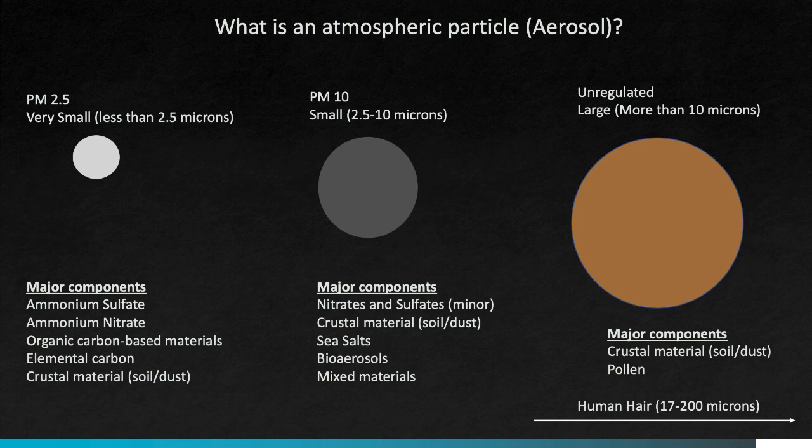The particle sizes we talk about start with PM2.5. This group is made of particles that are less than 2.5 microns in aerodynamic diameter, which is something like the actual diameter of the particle, but not exactly the same. These particles are mostly produced as a result of industrial activity, and contain chemicals that are byproducts of atmospheric reactions, including ammonium sulfate or ammonium nitrate. They also include organic carbon-based materials, some elemental carbon materials, and some crustal materials derived from soils — sometimes called dust.